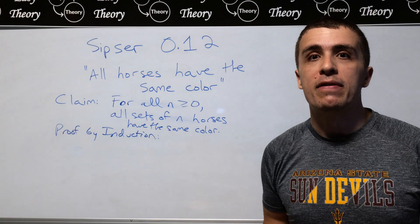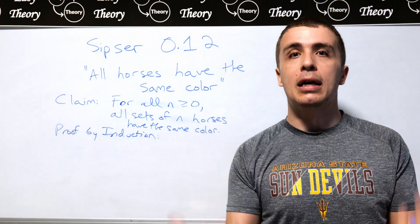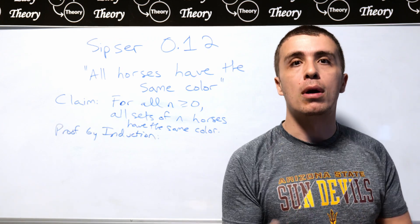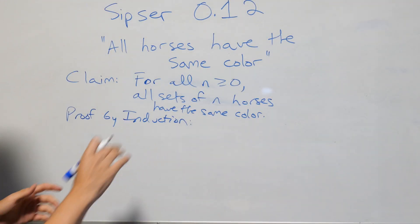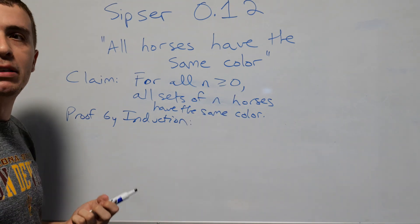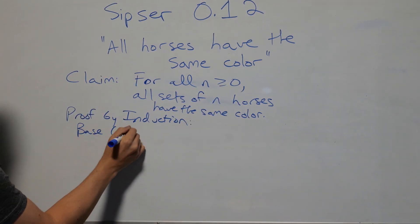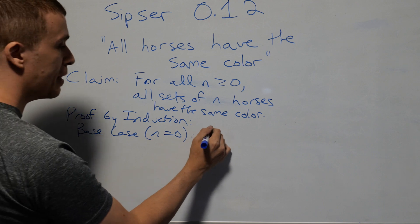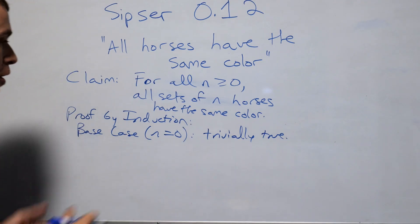Whenever we want to prove something via induction, we look at a base case, or several base cases if it makes sense. Then we try to assert something about some number of horses and prove it for more horses — a bigger set. The base case here is n equals 0. There are slight variants depending on the textbook; sometimes they use 1, but it's still true if we have 0 horses. With 0 horses, this is vacuously true — all of them have the same color.